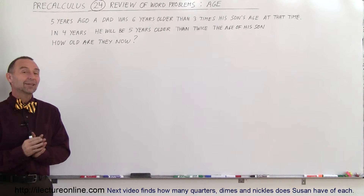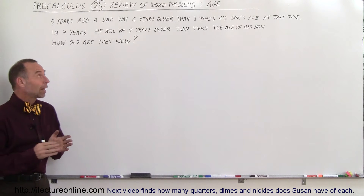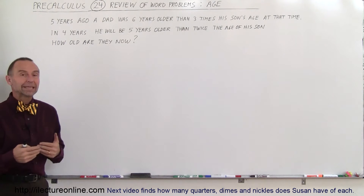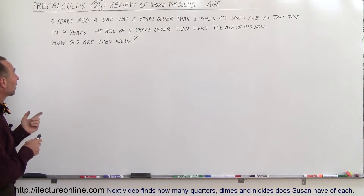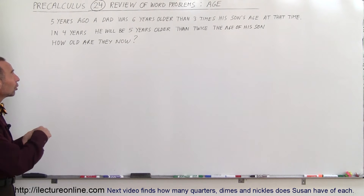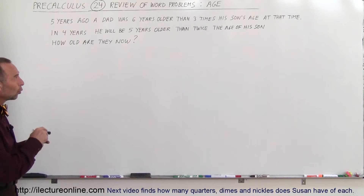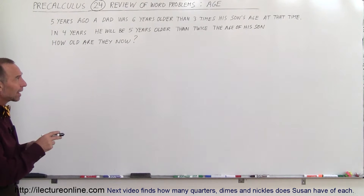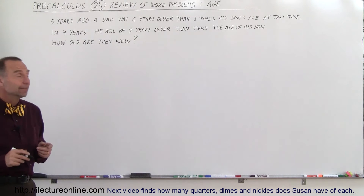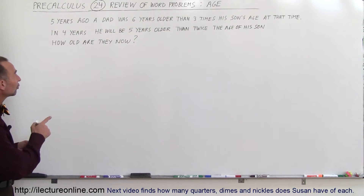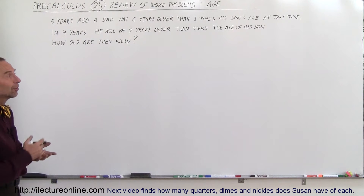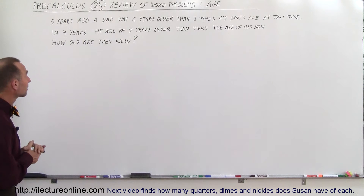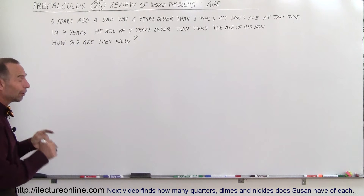Welcome to ElectronLine. Our next word problem involves age. Five years ago, a dad was six years older than three times his son's age at that time. In four years, he will be five years older than twice the age of his son at that time. How old are they now?